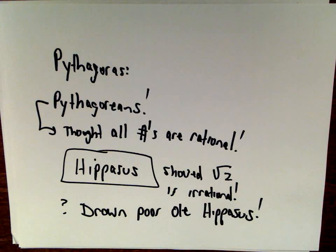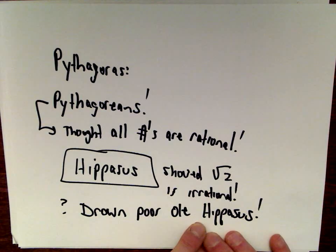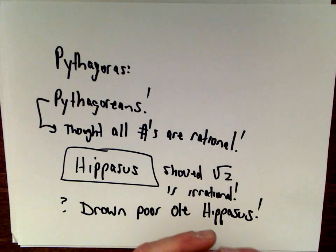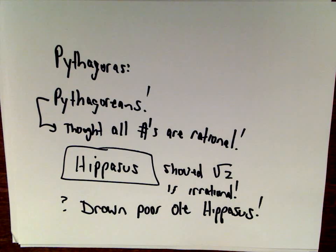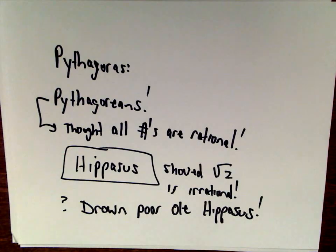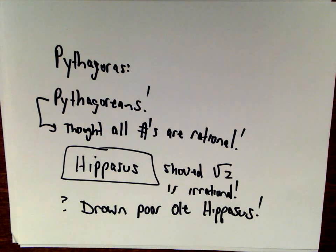According to another story, Hippasus was killed for constructing a dodecahedron inside a sphere. Did a math proof get Hippasus killed? There's definitely some debate — it's a very famous story, so go check it out if you're interested. There's your proof by contradiction, and a little lesson in Greek history. May or may not be true, but I think it's fascinating nonetheless. I hope you found this interesting as well. Have a great day. Bye.